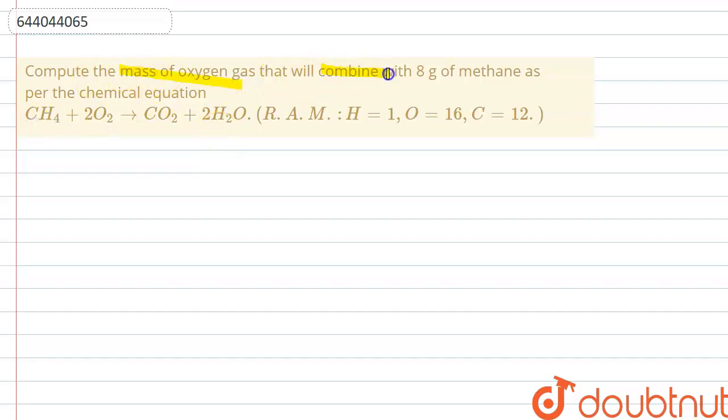So in this question they have given us a chemical reaction. The reaction is something like that: CH4, that is methane, reacts with two moles of oxygen to give carbon dioxide plus two moles of water, that is H2O.